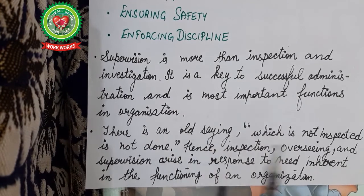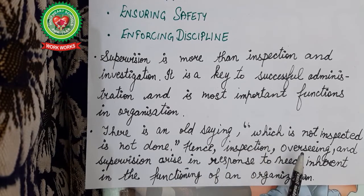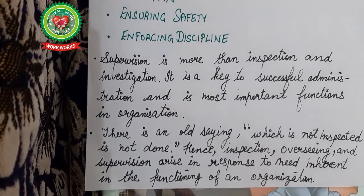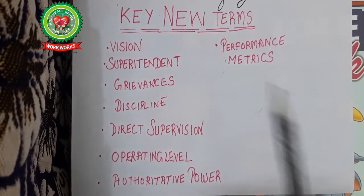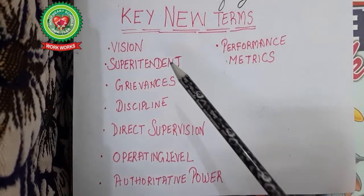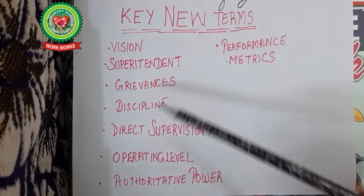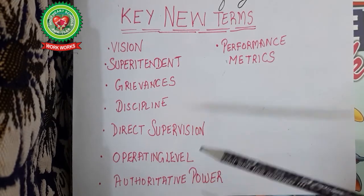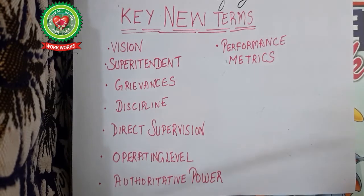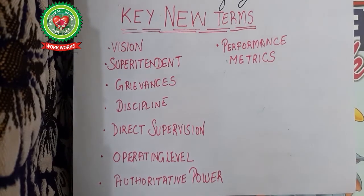There is an old saying: what is not inspected is not done. Hence, inspection, overseeing, and supervision arise in response to needs inherent in the functioning of an organization. Key terms in this chapter include: supervision, superintendent, grievances, discipline, direct supervision, operating level, authoritative power, and performance metrics. Listen to the video carefully to be able to answer questions on these key terms.